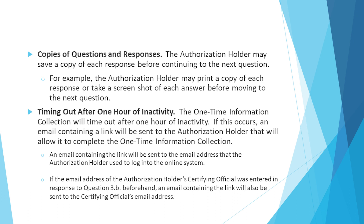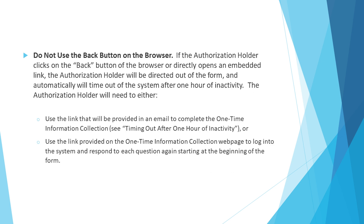Timing out after one hour of inactivity: the one-time information collection will time out after one hour of inactivity. If this occurs, an email containing a link will be sent to the authorization holder that will allow it to complete the one-time information collection. The email will be sent to the email address used to log into the online system. If the email address of the authorization holder's certifying official was entered in response to question 3B beforehand, an email containing the link will also be sent to the certifying official's email address.